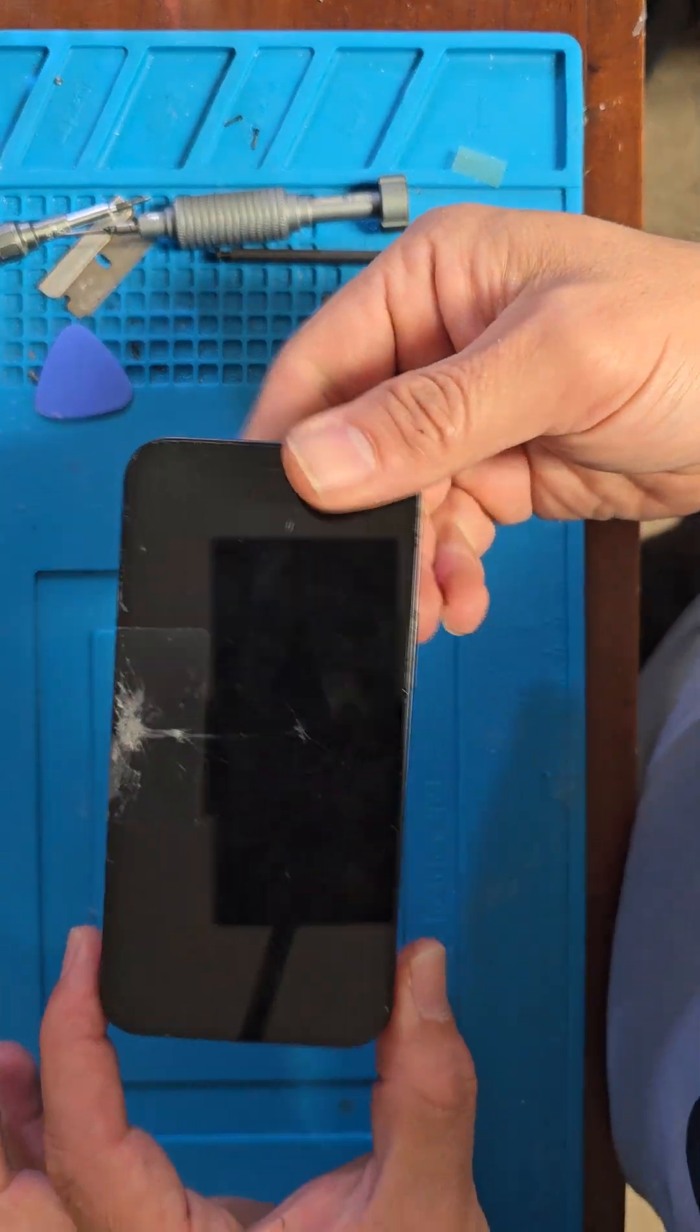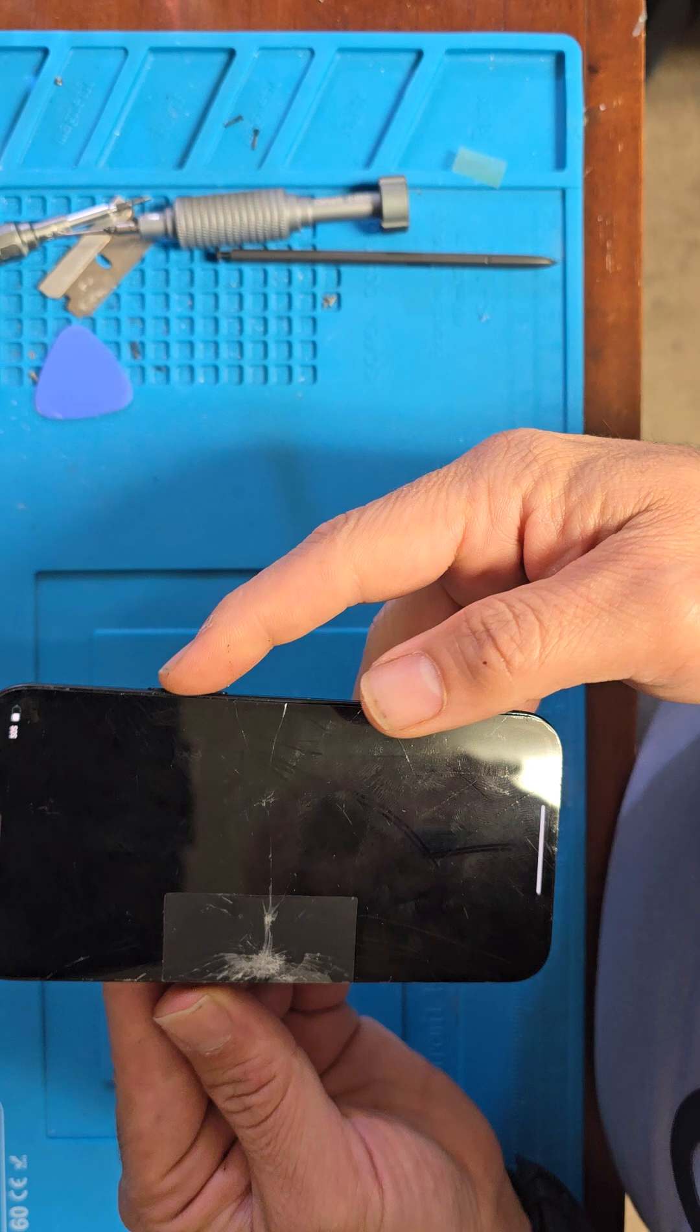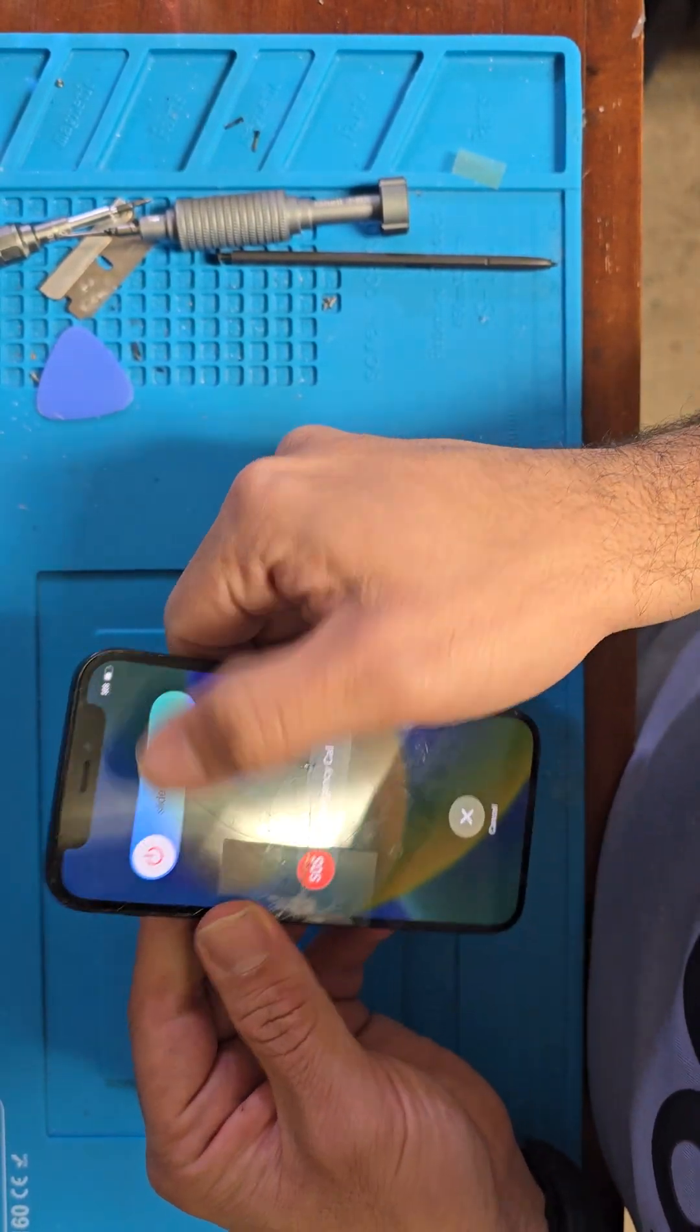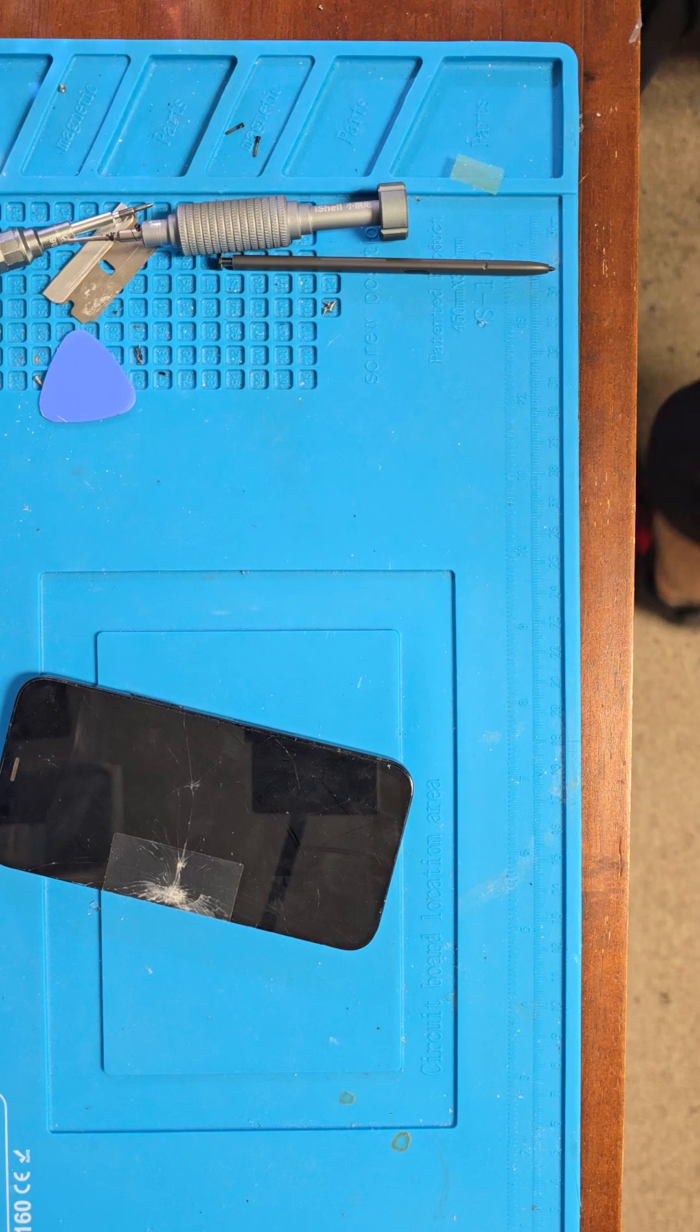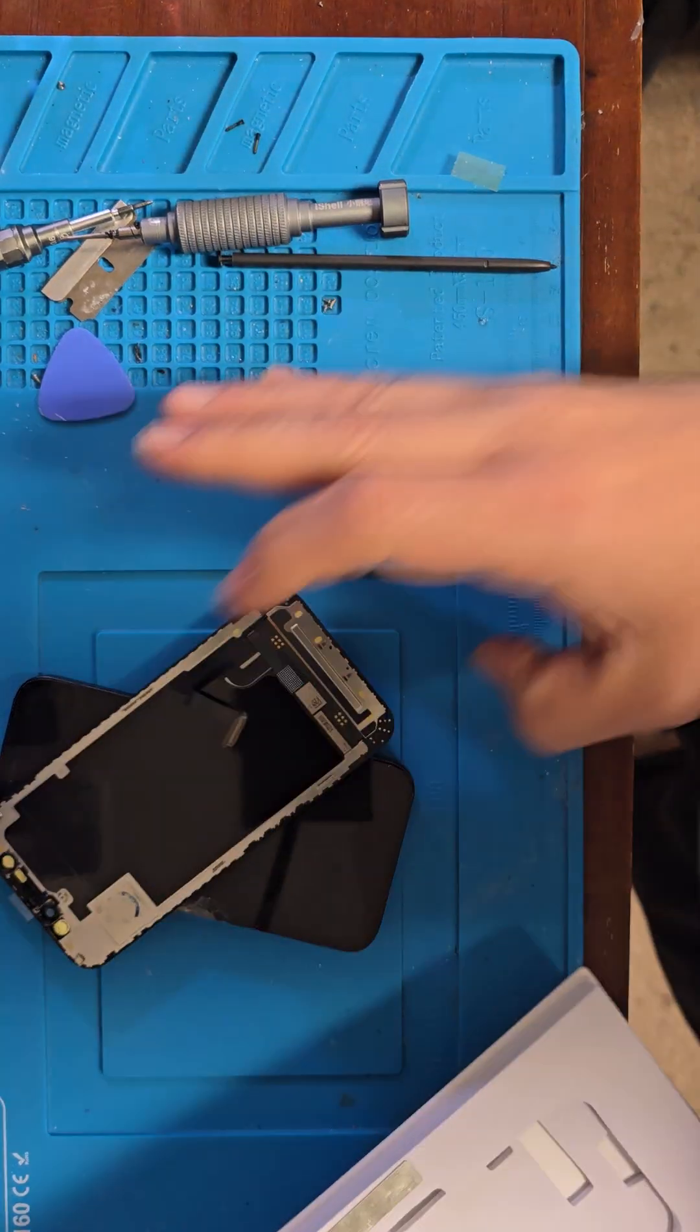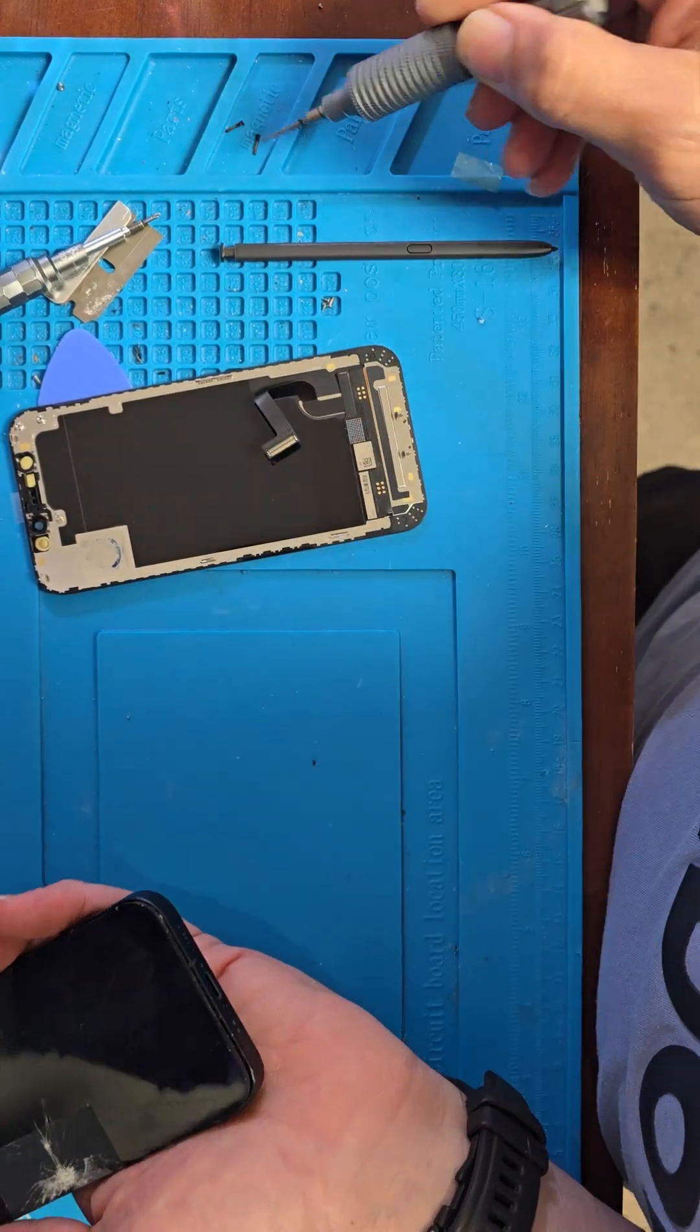Hello, today we have an iPhone 12 mini. We need to replace the screen, it's cracked here. Let's turn it off first. Here is the screen. We're going to do it very quick. First, remove the two screws from here.